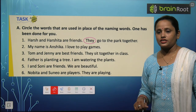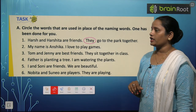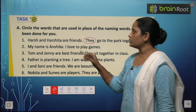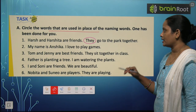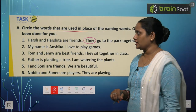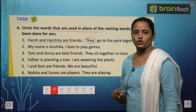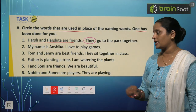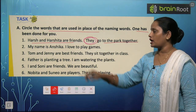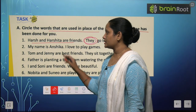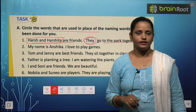Now let's do the first exercise of this chapter. Circle the words that are used in place of naming words. One has been done. So let's see — Harsh and Harshita are friends. They go to the park together. Here we use They for Harsh and Harshita. Clear?